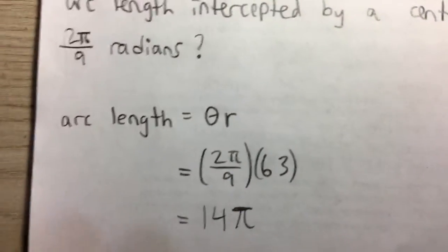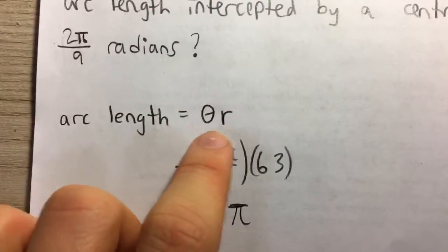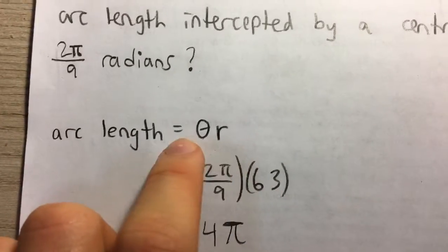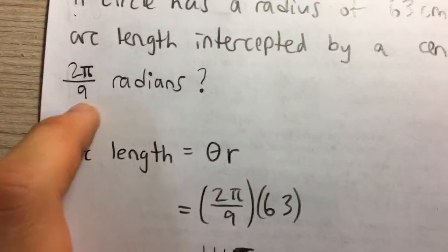But this time we have radians, so we're going to use the radians version, which is simple. It's just arc length equals theta times r, theta being the central angle in radians and r being the radius of the circle.